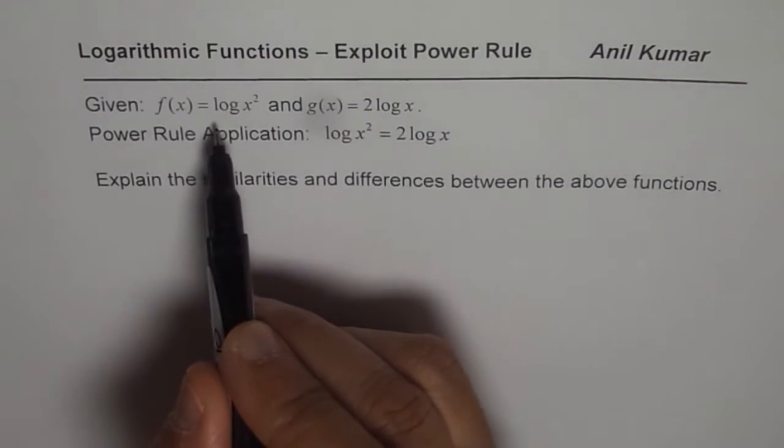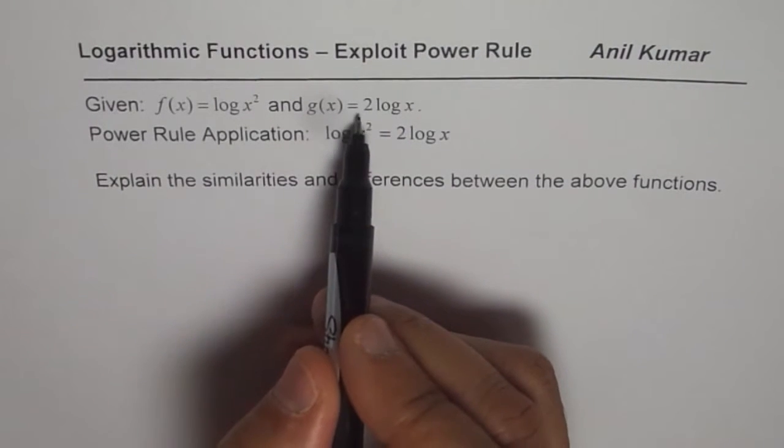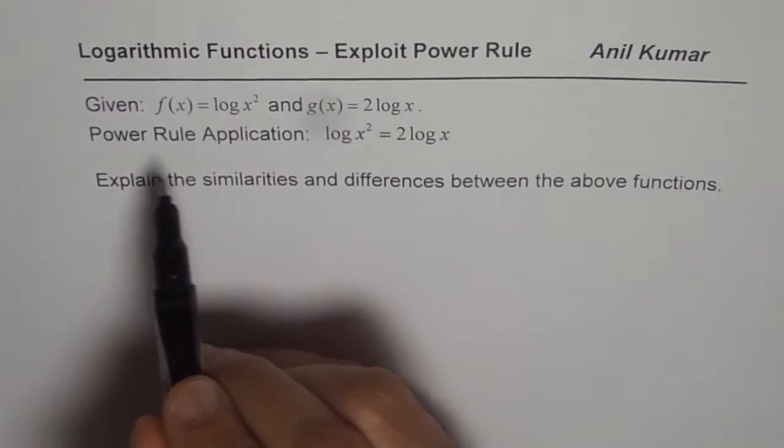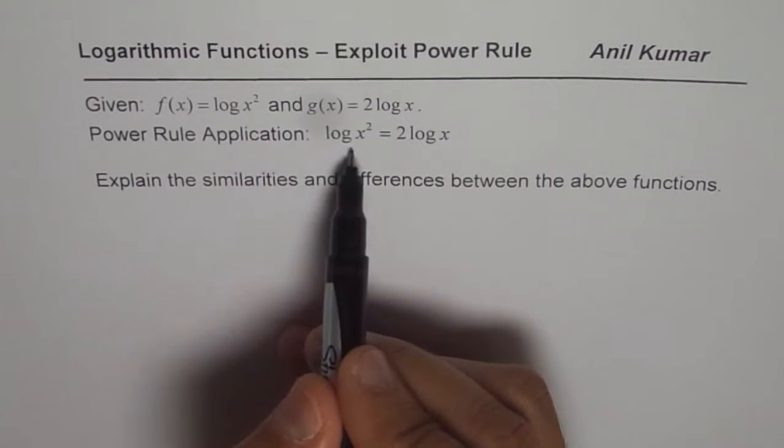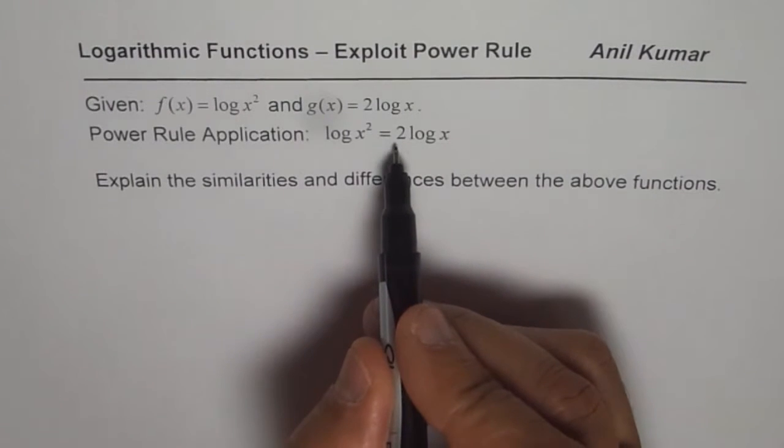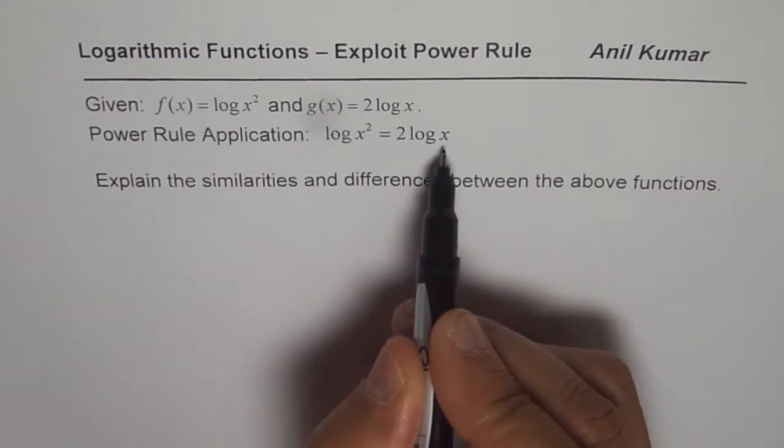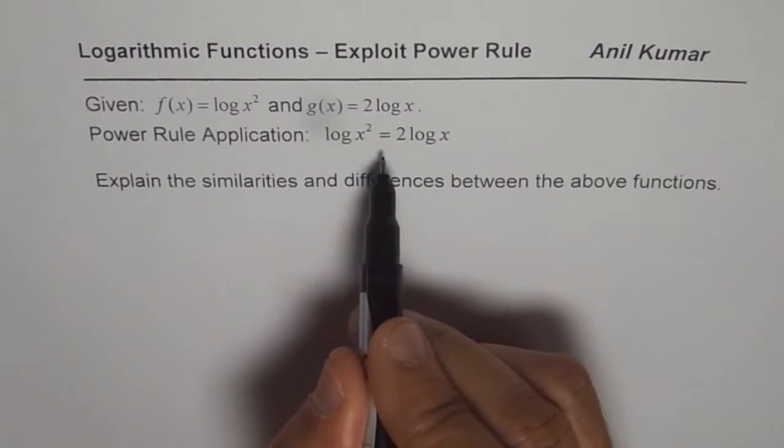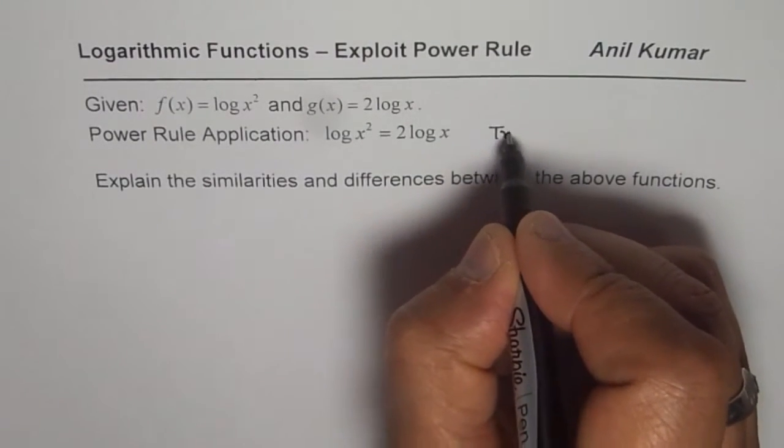Given f of x equals log x squared and g of x equals 2 times log of x, you know the power rule, right? So if you apply power rule to log of x squared, you get log of x squared equals 2 times log x. Is that statement true or false? So you know, from power rule it is true. So let me give you a first answer that this statement is true.